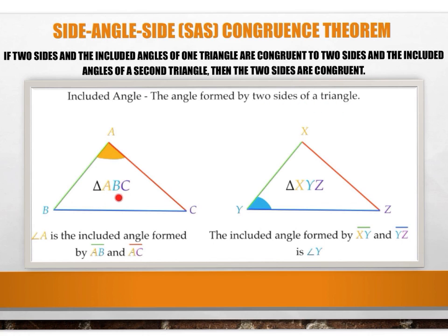Let's take a look at triangle ABC and triangle XYZ. Angle A is the included angle formed by side AB and side AC — the angle that's in between two sides is considered the included angle. For triangle XYZ, the included angle formed by sides XY and YZ is angle Y, which is in between sides XY and YZ.